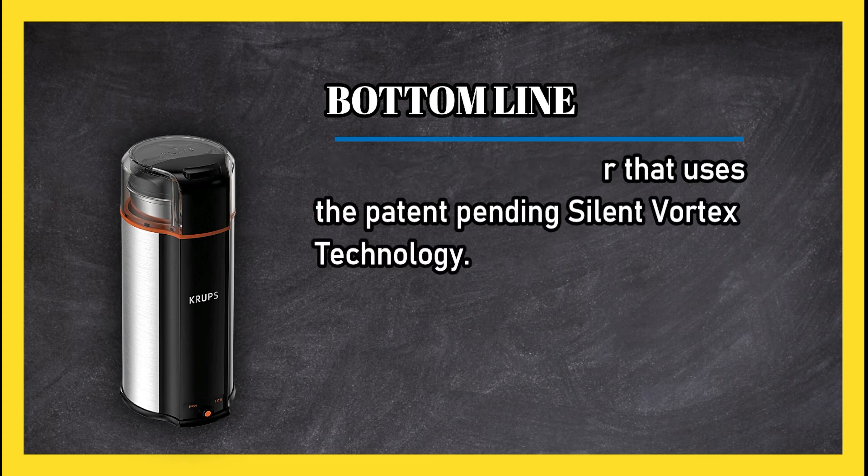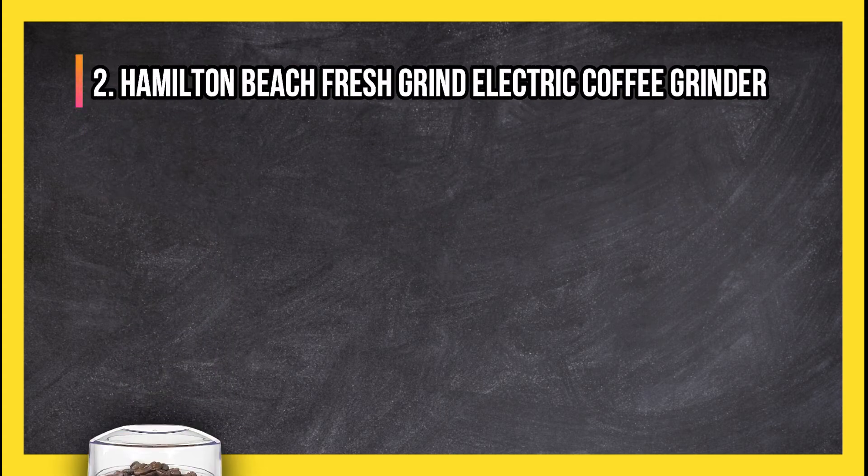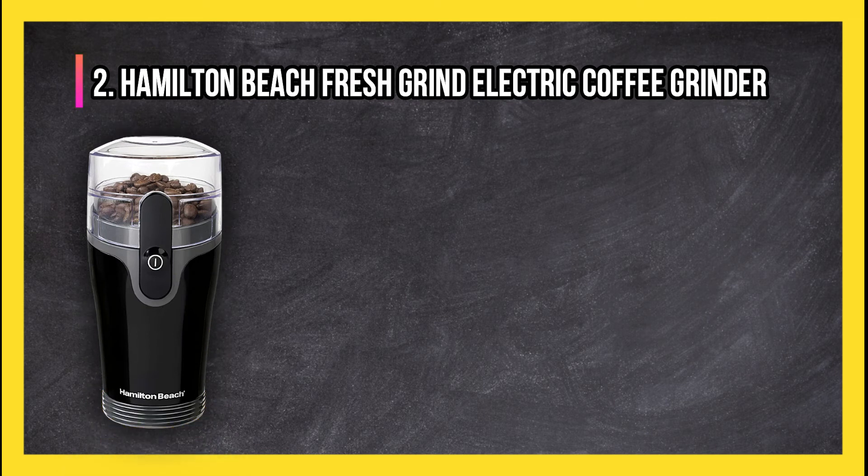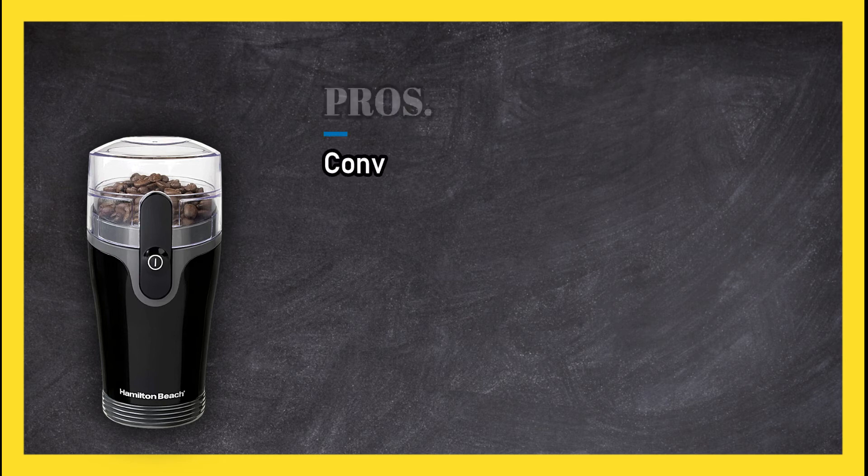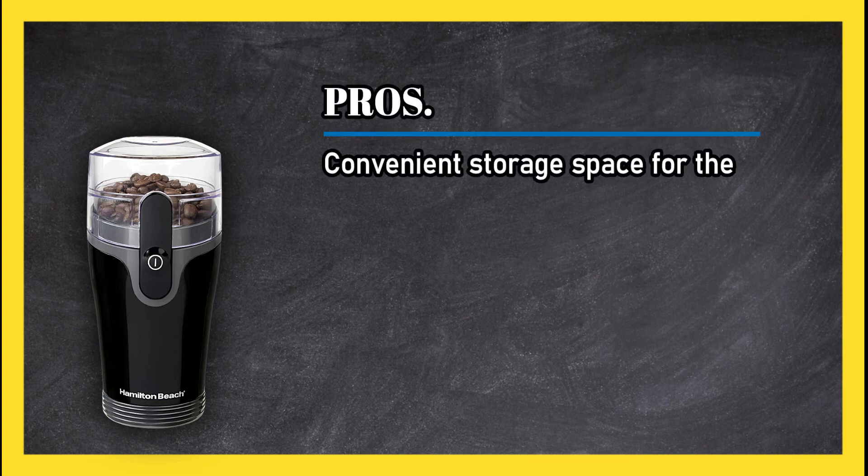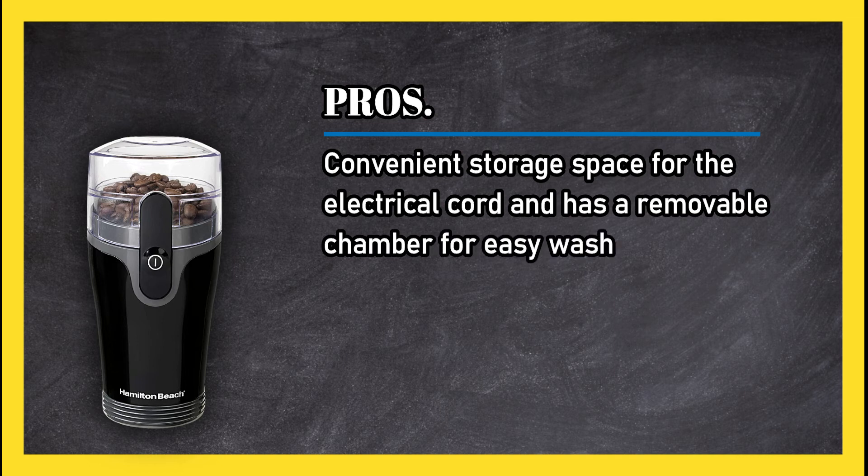At number two: Hamilton Beach Fresh Grind Electric Coffee Grinder. It has convenient storage space for the electrical cord and has a removable chamber for easy washing. Steel blades grind coffee and spices, and it is quieter than other models.